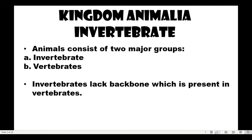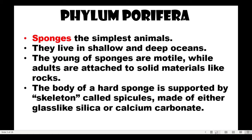Kingdom Animalia has two groups: those with backbone (vertebrates) and those without (invertebrates). We will start with the invertebrates. Under Kingdom Animalia, these are the different phyla. Going from Kingdom down, the next classification level is Phylum.